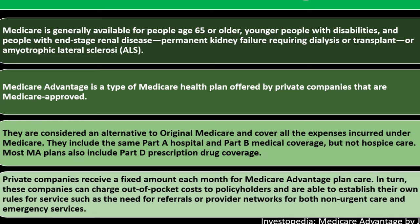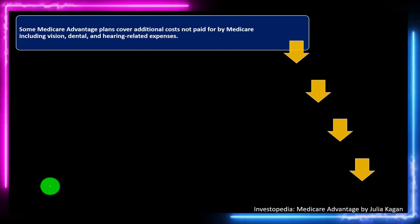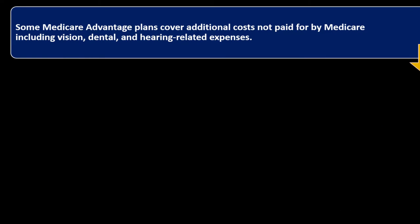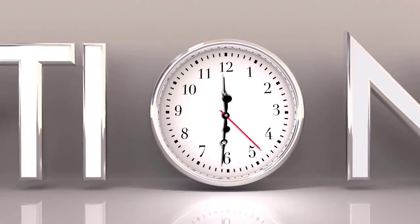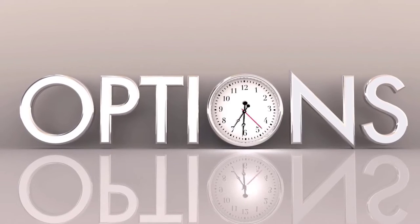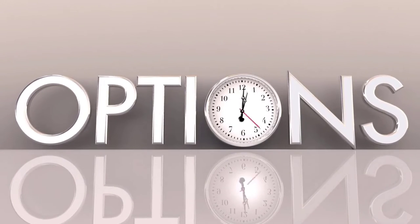In turn, these companies can charge out-of-pocket costs to policyholders and are able to establish their own rules for service, such as the need for referrals or provider networks for both non-urgent and emergency services. Some Medicare Advantage plans cover additional costs not paid by Medicare, including vision, dental, and hearing-related expenses. Medicare Advantage plans don't work with Medigap, also called Medicare Supplement Insurance, so you'll want to compare and contrast your options between Medicare Advantage and Medigap.